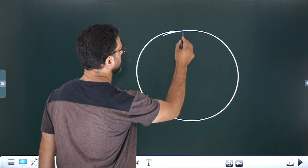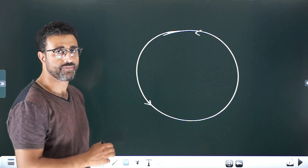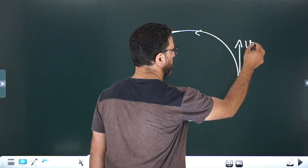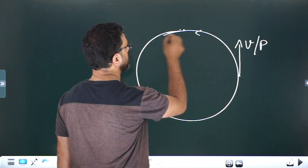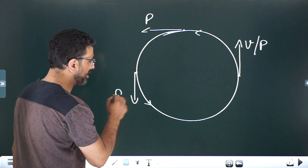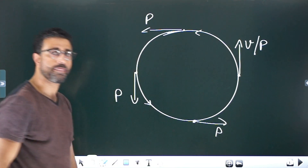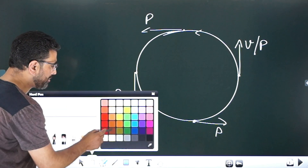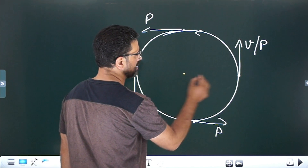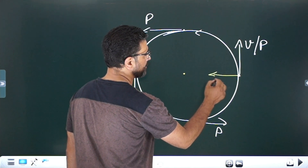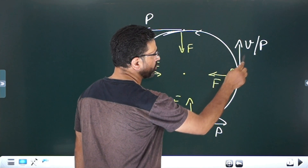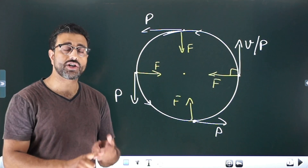Suppose some particle is undergoing uniform circular motion. The momentum is in the tangential direction. A force is involved — we know that circular motion involves centripetal force, which is directed towards the center. From kinematics, when force is perpendicular to momentum and velocity, speed does not change.